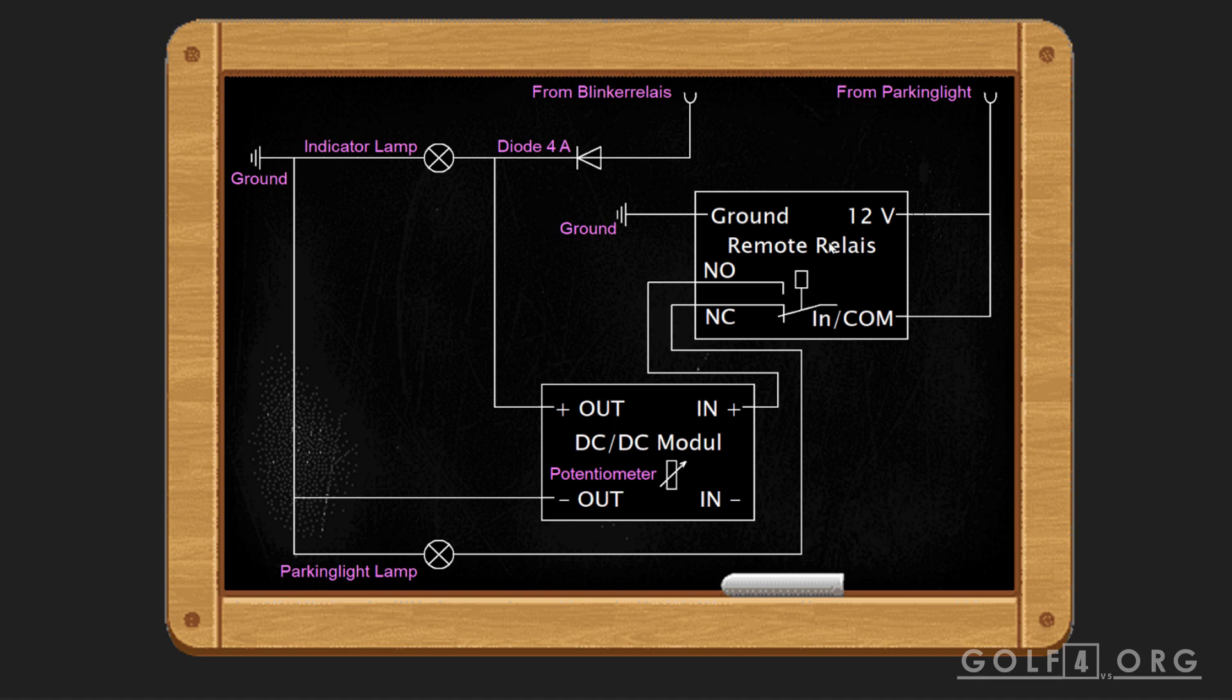If you press a button on the remote, NO becomes connected. So this DC-DC module becomes connected to the 12-volt input. Your parking light lamp will go out. The DC-DC module converts that 12 volts into around 6 volts. Again, you can adjust that with a potentiometer and then it goes to the indicator lamp. So your remote could change between normal parking light and indicator light.